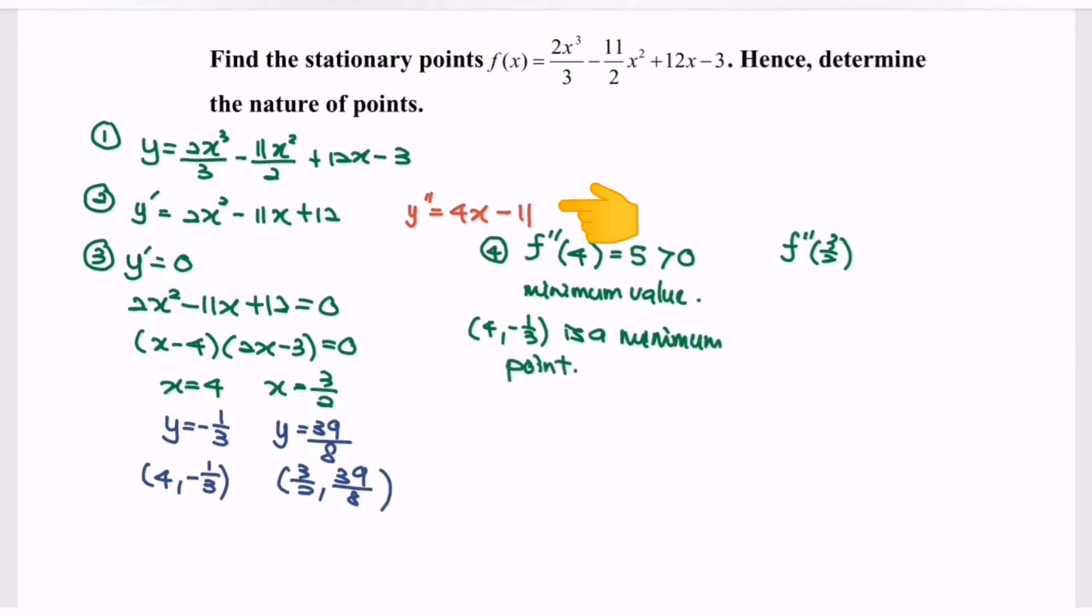Next, move on to 3 over 2 for the right hand side. If we substitute the value 3 over 2 into the second derivative function, we will have the value negative 5, which is less than 0, meaning that it is a maximum value. Or we can say for the point 3 over 2 comma 39 over 8, this is a maximum point.